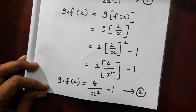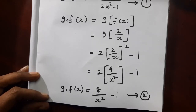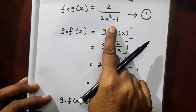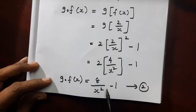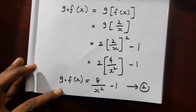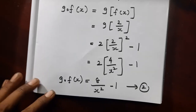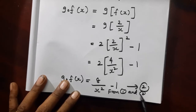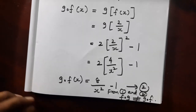From equation 1, f dot g of x equals 2 divided by 2x squared minus 1. From equation 2, g dot f of x equals 8 divided by x squared, minus 1. From equations 1 and 2, f dot g is not equal to g dot f. So we have finished the second part.